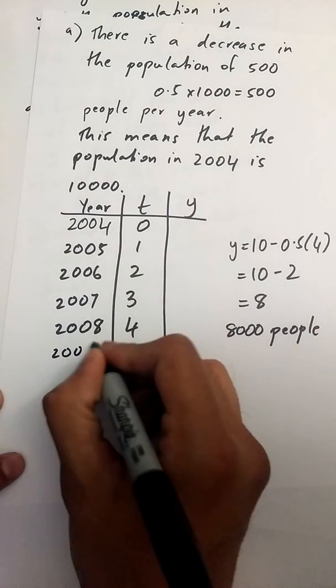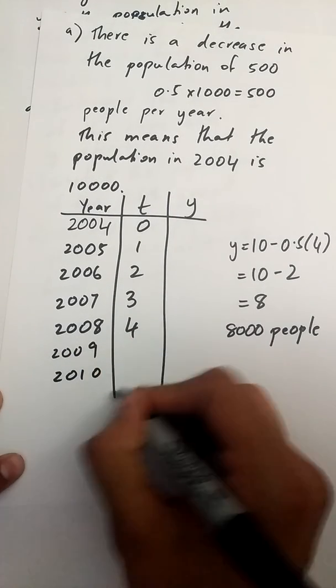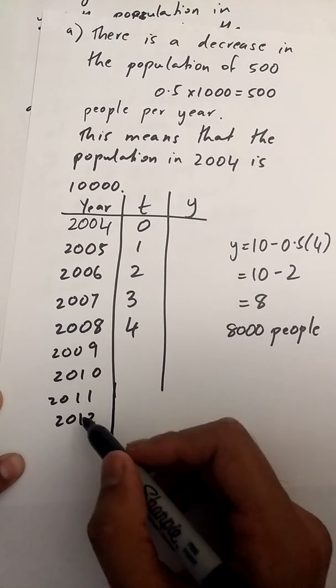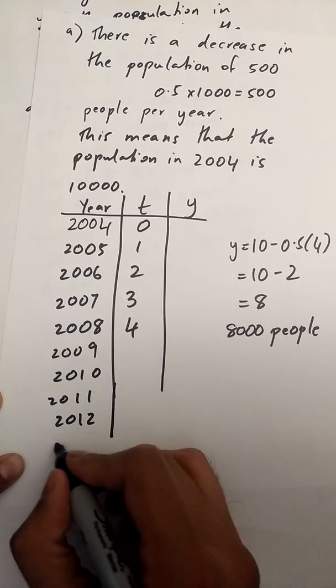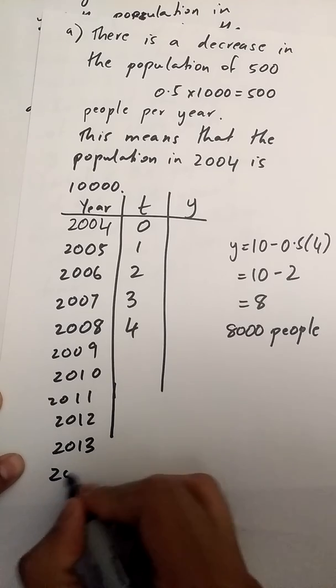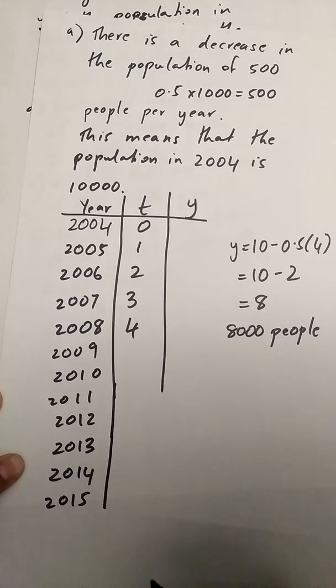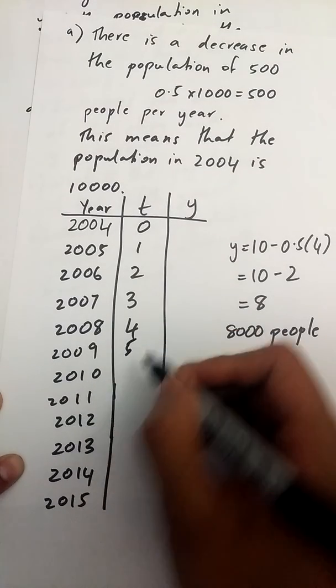So 2009, 2010, 2011, 2012. So that's my final year. I want to find my population three years after this. So that's 2013, 2014, and then 2015 is my third year after my final year.